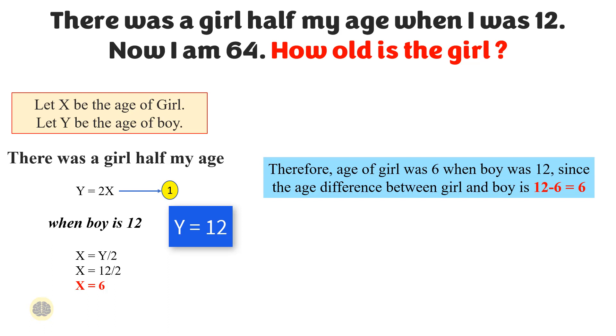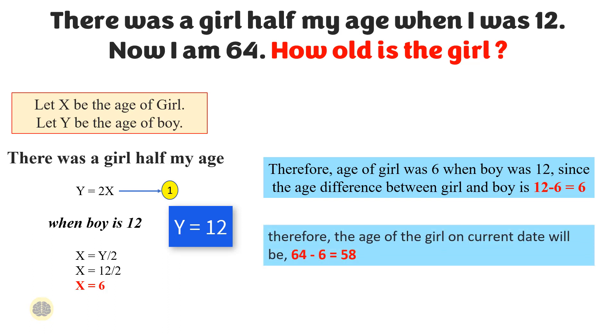Since the age difference between the girl and the boy is 12 minus 6, which equals 6, the age of the girl on the current date will be 64 minus 6, which equals 58.